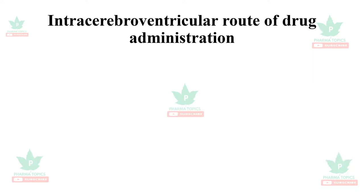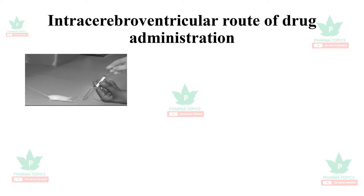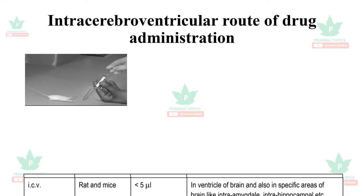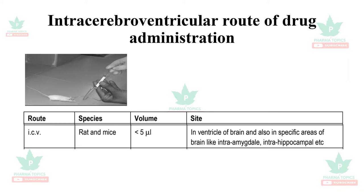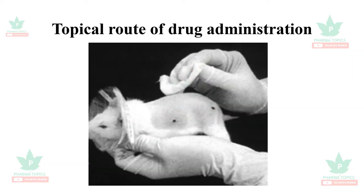The intracerebroventricular route of drug administration is rarely used and is reserved for CNS studies. The drug administered in rats and mice is less than 5 microliters. It is administered into the ventricles of the brain and also in specific regions such as the intra-amygdala or intra-hippocampal regions.